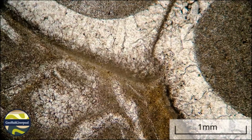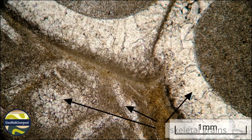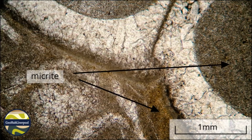This is a thin section which shows skeletal grains or bioclasts, and it is a sedimentary rock. Under plain polarised light, the skeletal grains are shells of different types. It is easy to see their outlines because they are colourless and are surrounded by areas with a darker brown colour. These dark areas are very fine carbonate mud or micrite. Micrite is less than 62 microns in size and they are little grains of calcium carbonate.